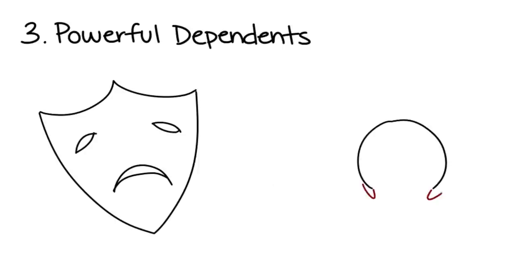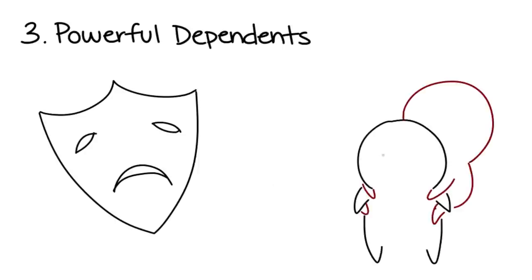Number 3: Powerful Dependents. Powerful dependents pretend to be weak and powerless, then use their helplessness to dominate relationships. That is, they send the subtle message: you must not let me down.